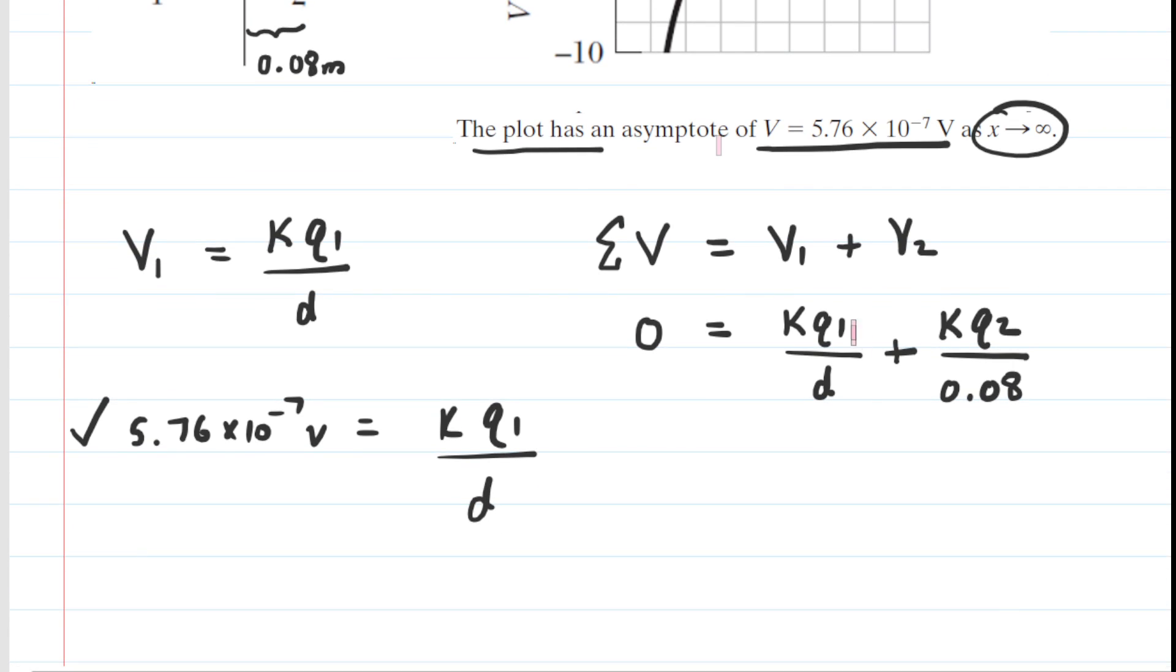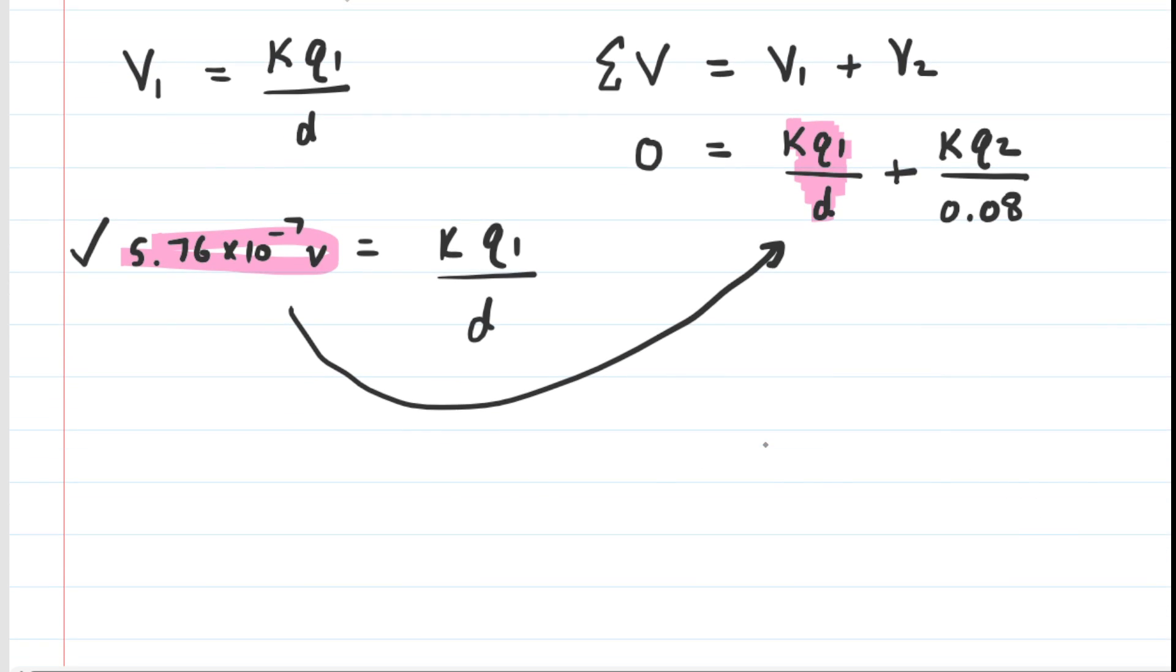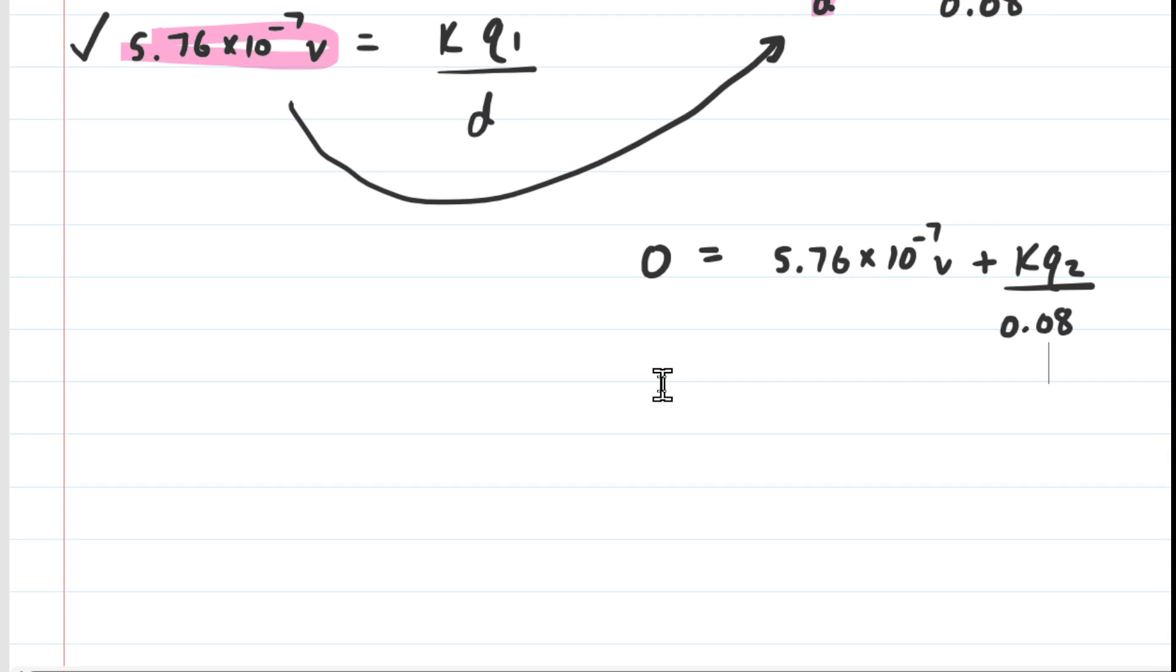But now here's what's kind of nifty, is that this K times Q1 over d, we had solved for that earlier. We obtained this value right here, which means we're going to be able to plug that value in for the KQ1 over d. And now we have an opportunity to actually solve for Q2.